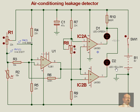Both LEDs are in the off situation. If the temperature is increasing or decreasing, this voltage will fall when the temperature increases, and will rise when the temperature is decreasing. This is a negative temperature coefficient sensor.